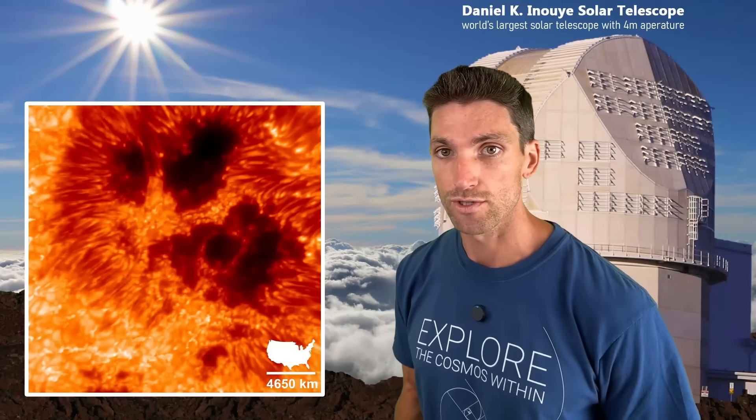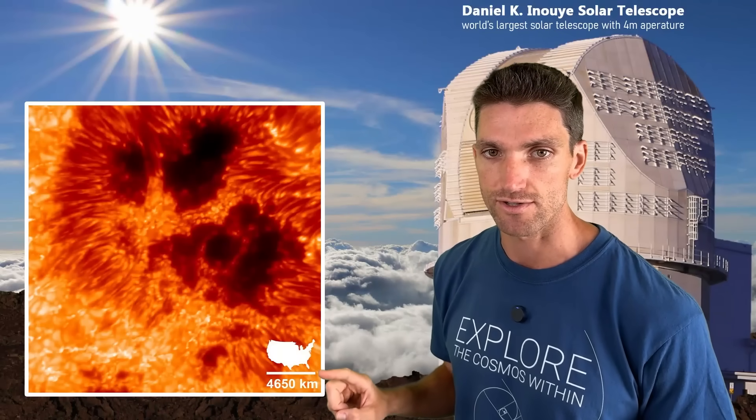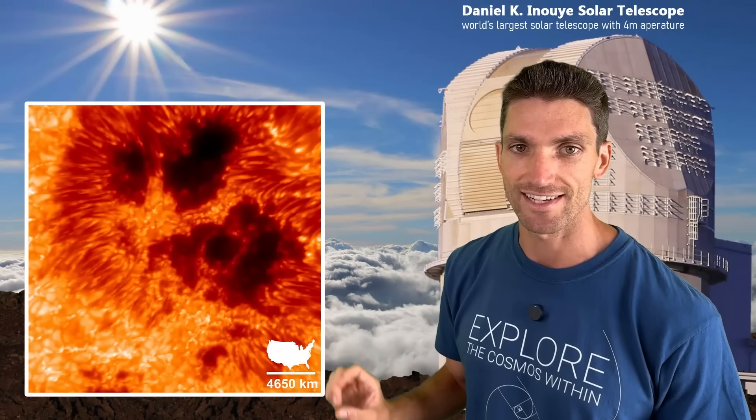There's also the Daniel K. Inouye Solar Telescope on the island of Maui, Hawaii. And this is the world's largest solar telescope with a four-meter aperture. And it's getting super high-resolution looks at the sun as well. Here we see a sunspot on the sun, super punched in, very high-quality. Here's our scale bar there, the United States for reference.